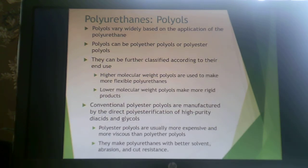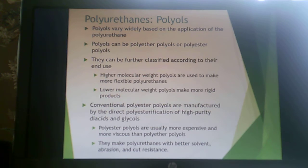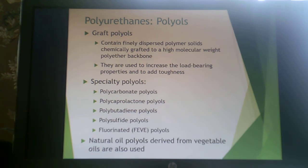The polyol component is where you can tailor things to the application — polyether or polyester, further classified by end use. Higher molecular weight polyols give more flexible products; lower molecular weight gives more rigid products. Conventional polyester polyols are made by direct polyesterification of high-purity diacids and glycols — more expensive but offering better solvent, abrasion, and cut resistance. Graft polyols have polymer solids in a high-molecular-weight polyether backbone and increase load-bearing properties and toughness. Specialty polyols include polycarbonate polyols, polycaprolactone, polybutadiene, polysulfide, fluorinated polyols, and natural oil polyols derived from vegetable oils.